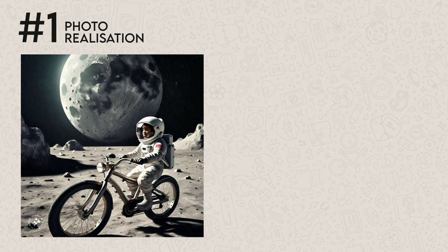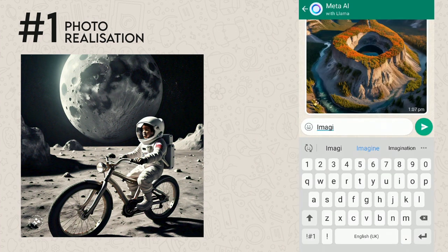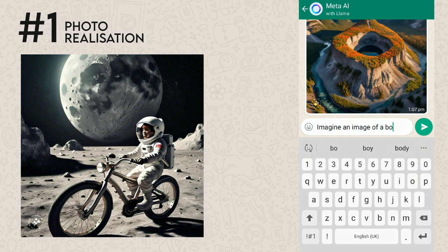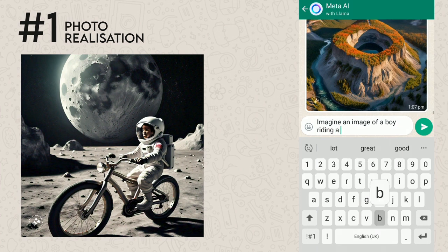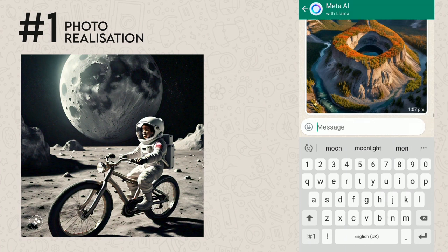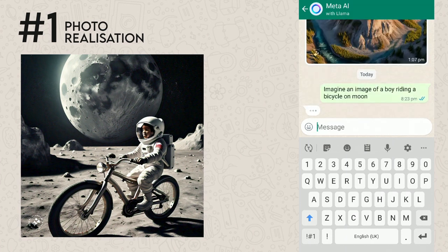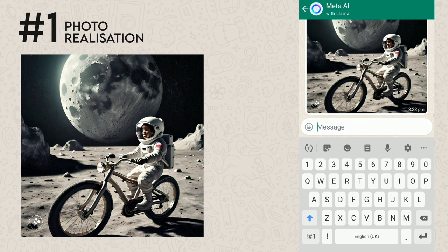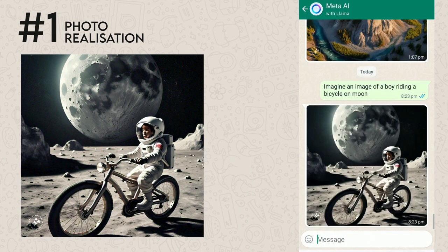Number one is photorealization, or imagining an image. This is used to give instructions to WhatsApp Meta AI on creating something fascinating and unrealistic. For example, I'll give it a prompt of a boy riding a bicycle on the moon, and you can see what it creates. These are images you can't get from Google or Pinterest, but you can use WhatsApp Meta AI to create them.